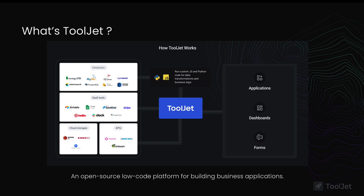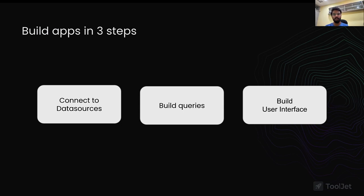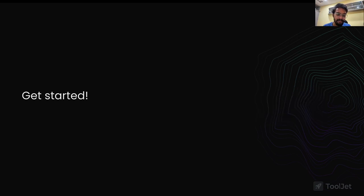Building apps with ToolJet can be done in three steps. First, you connect to a data source — it can be a database or an API. Next, you build queries to fetch data from that data source. Then, with the data ready, you build user interfaces using readily available components and populate them with the data from your queries. So: connect to data source, build queries, build UI.